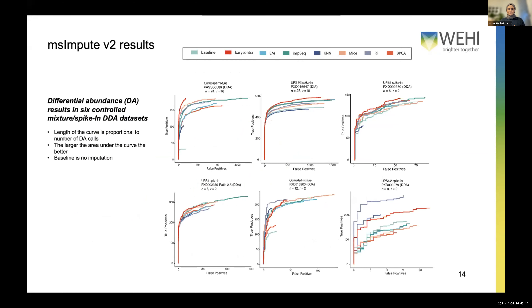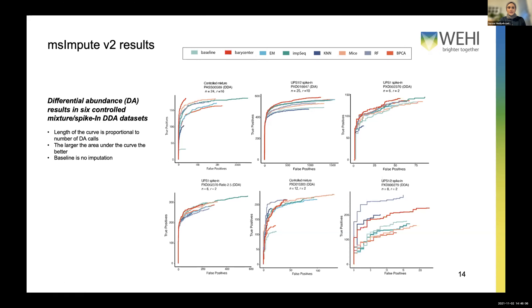Looking at benchmarking results, we used six published controlled mixture or UPS1 spiked datasets — datasets where proteins are spiked at known concentrations and only specific proteins should be differentially abundant. We looked at ROC curves; the larger the area under the curve, the better. In most cases, the barycenter approach produces the outermost curve, giving a large number of true positives while maintaining a good false positive rate. We compared it against state-of-the-art imputation methods and were happy to see the barycenter performing best.